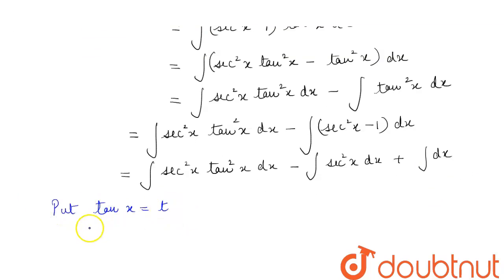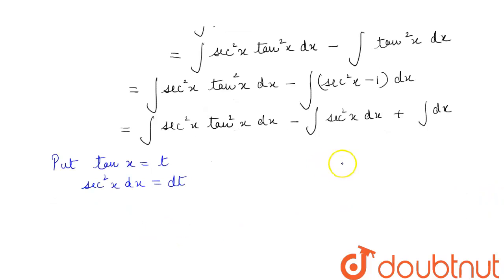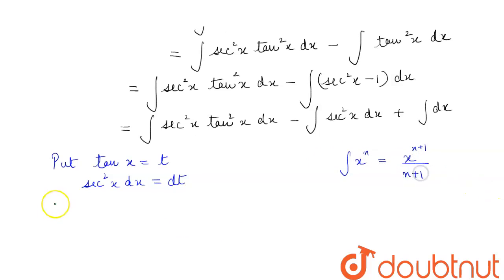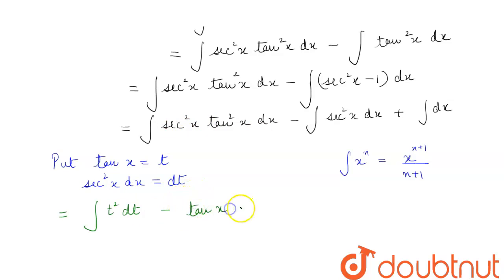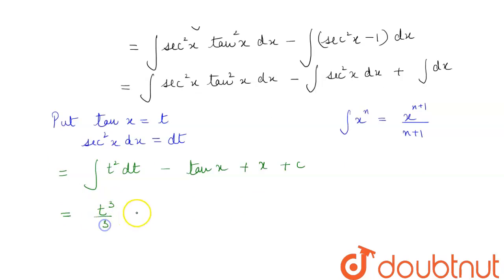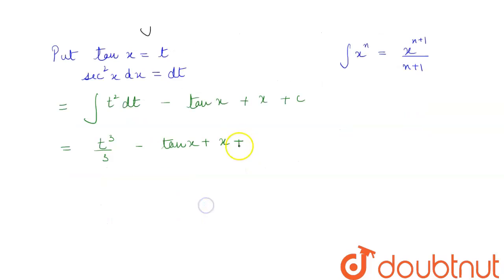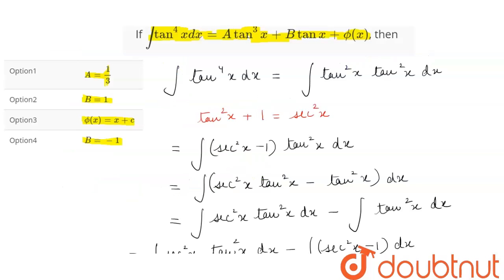Now, if we put tan x equal to t, then differentiating both sides gives secant square x dx equal to dt. Using the power rule, integration of x to the power n is x to the power n plus 1 upon n plus 1. Substituting, tan square x becomes t square and secant square x dx becomes dt. This gives t cubed divided by 3 minus tan x plus x plus c. Substituting back t as tan x, we get tan cube x divided by 3 minus tan x plus x plus c.